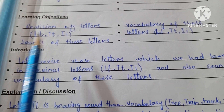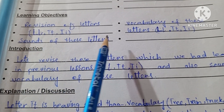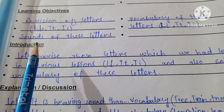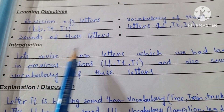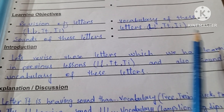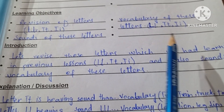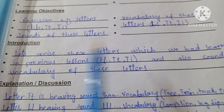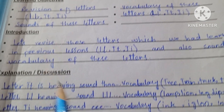Learning objectives: review of letters L, T, and I; sounds of these letters; and also the vocabulary of these letters. Students are able to recognize these letters.